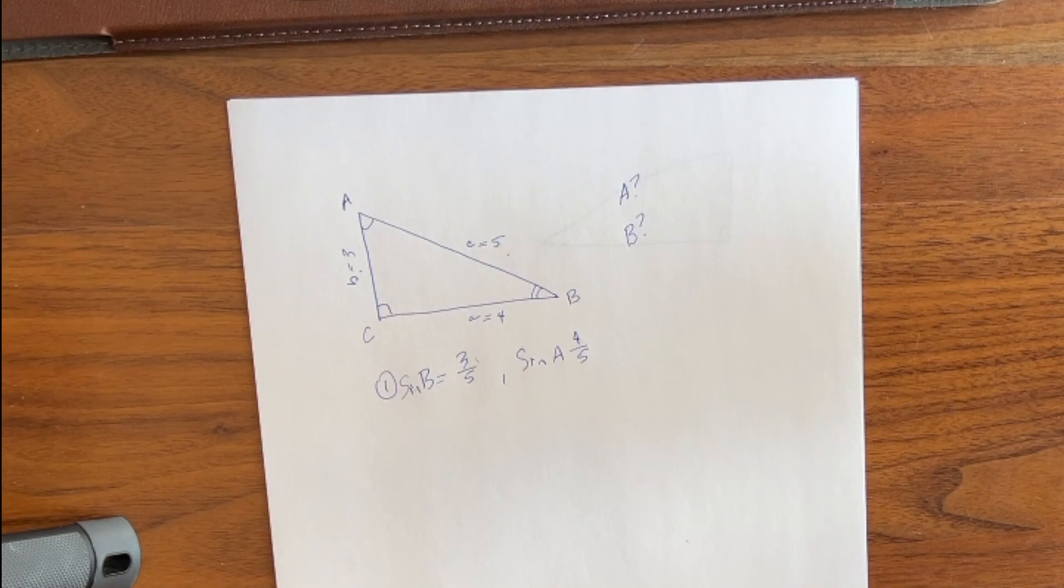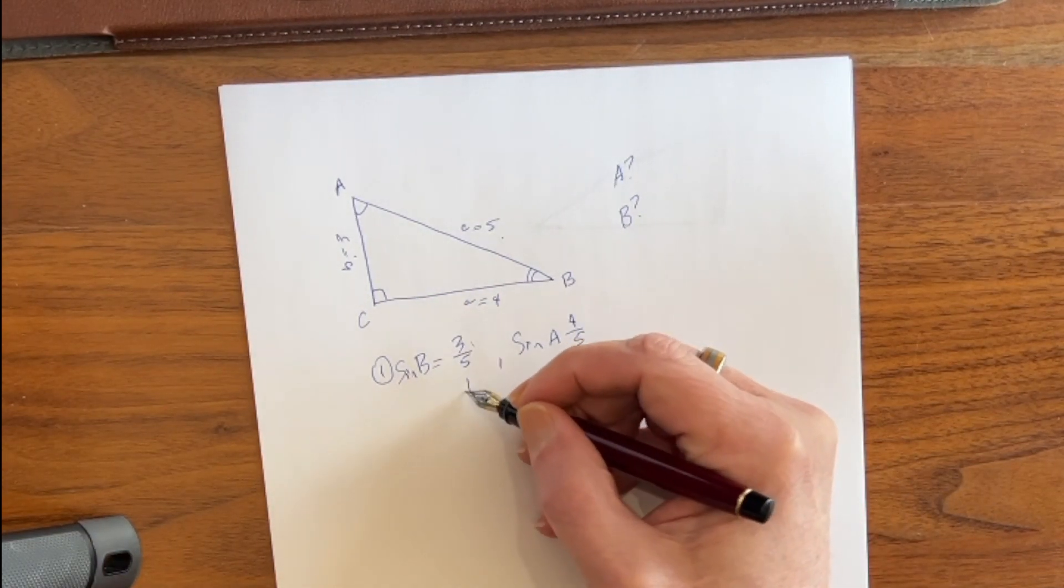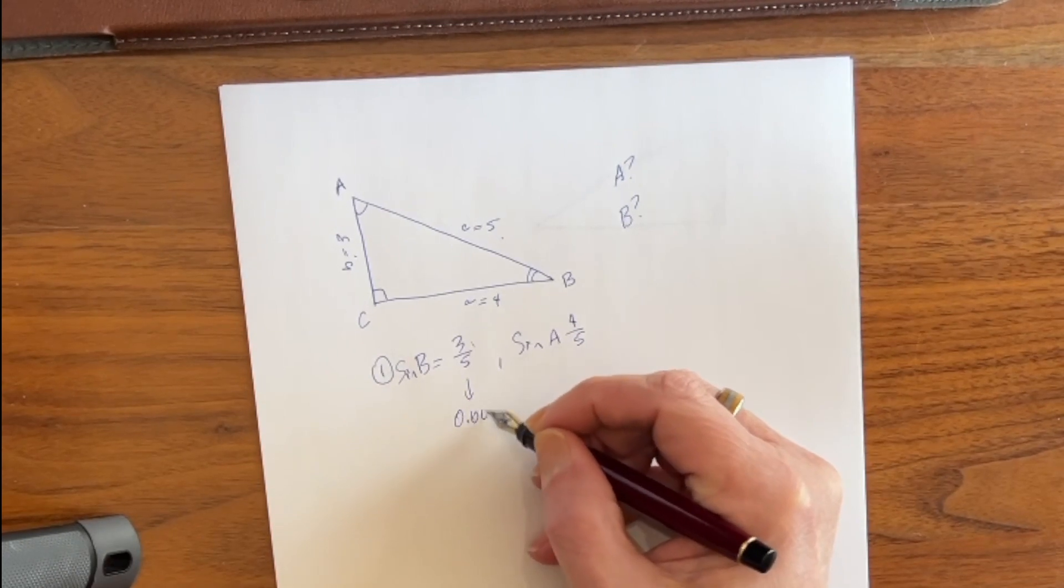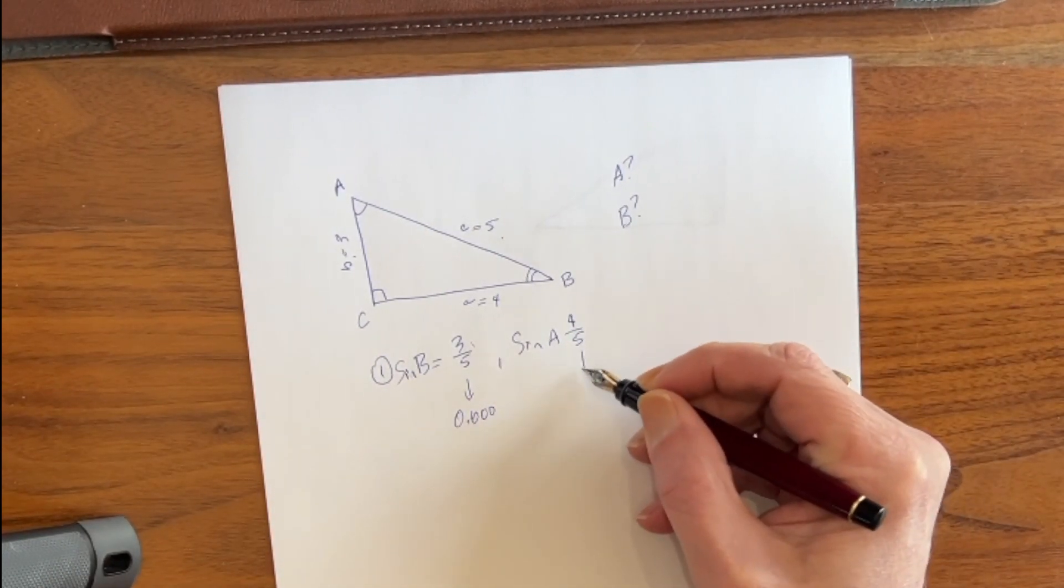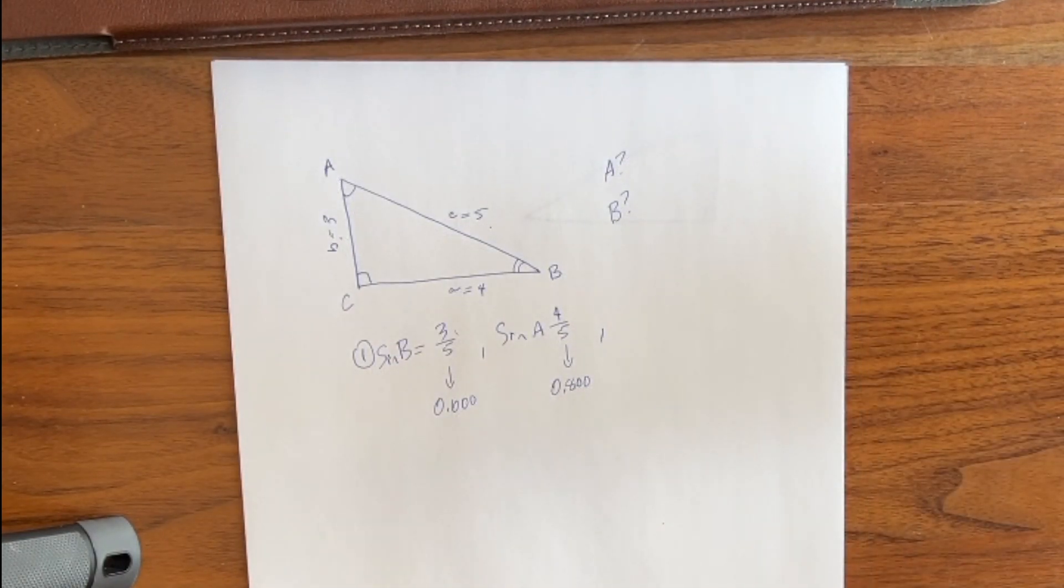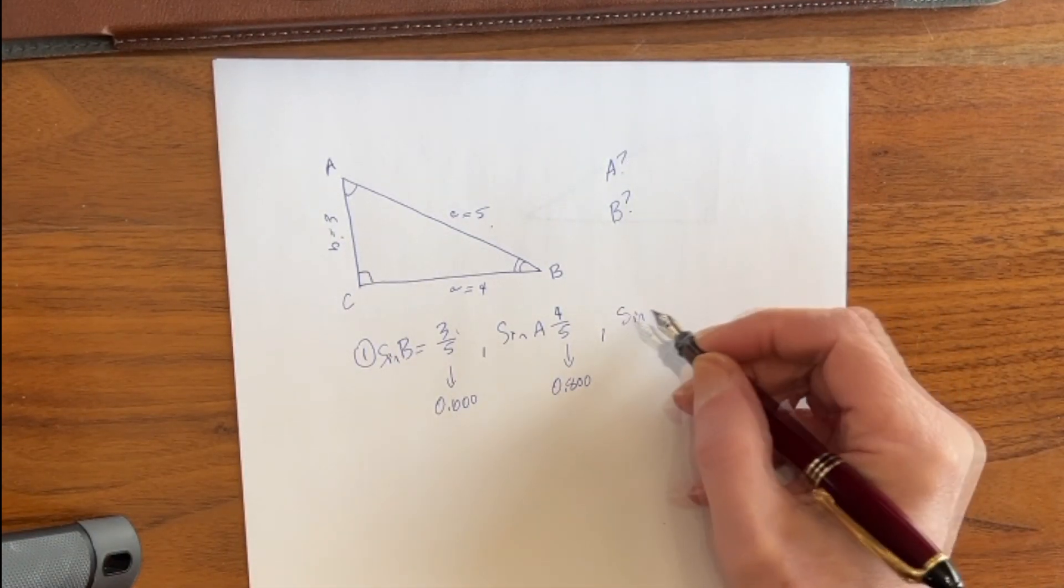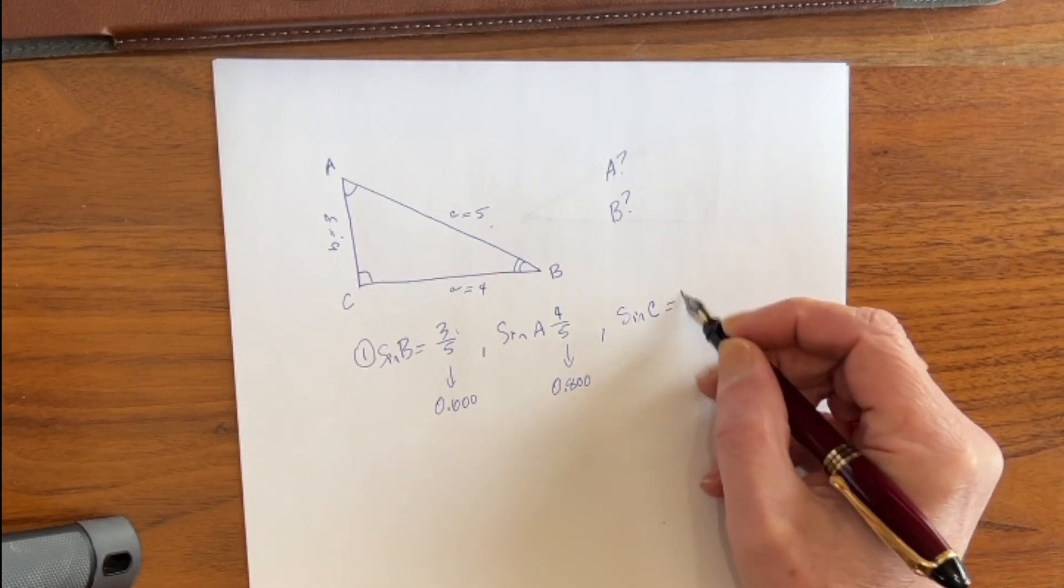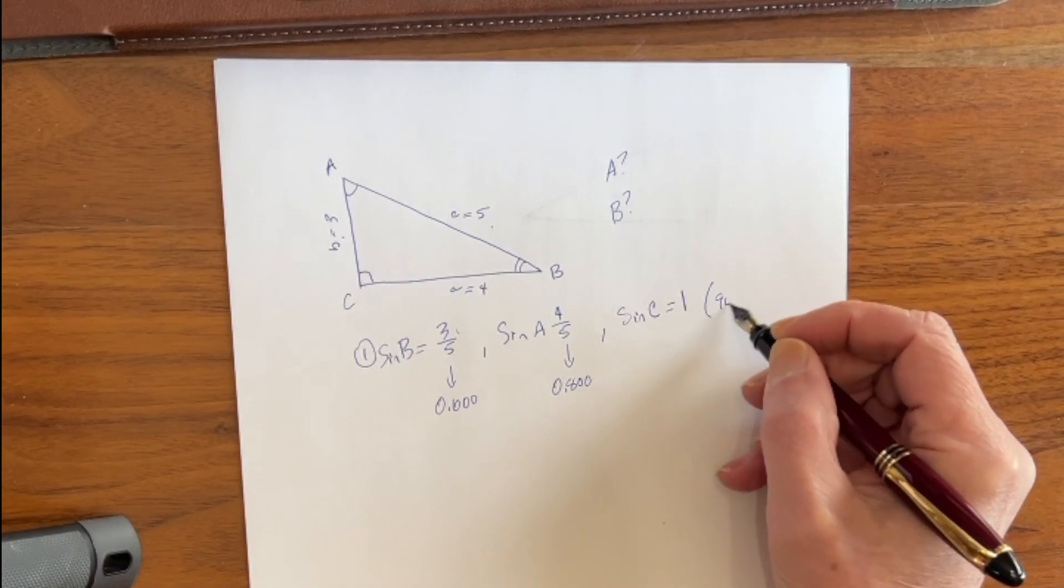Now we can solve this a couple of different ways. We know that equals 0.60, and we know that equals 0.80. Now one thing that you may not know is that the sine of angle C equals 1, because it's 90 degrees.